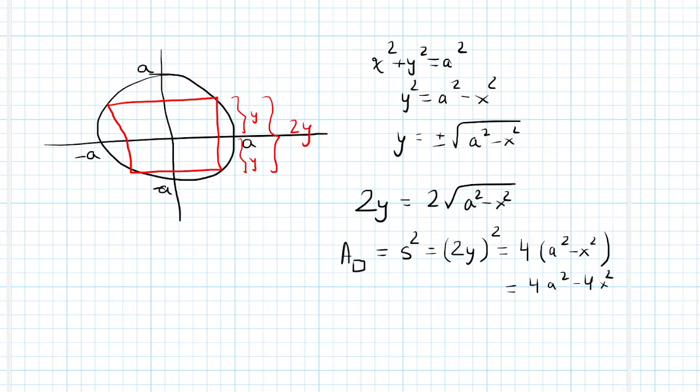So now all we have to do is integrate this. So the integral is going from negative A to A. And then inside we put the area of the square, which we said was 4 times A squared minus x squared. And I'm just going to factor out the 4.